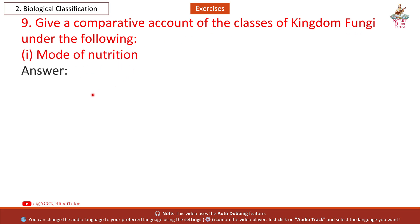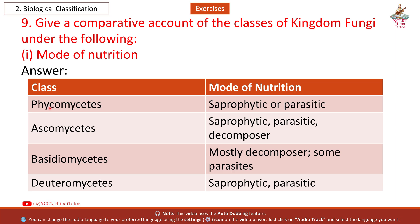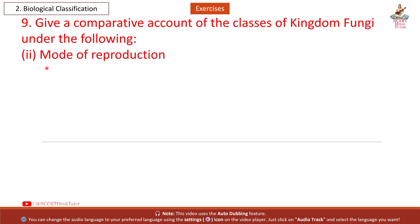Question 9: Give a comparative account of the classes of Kingdom Fungi — mode of nutrition. Phycomycetes: saprophytic, parasitic, decomposer. Ascomycetes: mostly decomposer, some parasites. Deuteromycetes: saprophytic and parasitic.